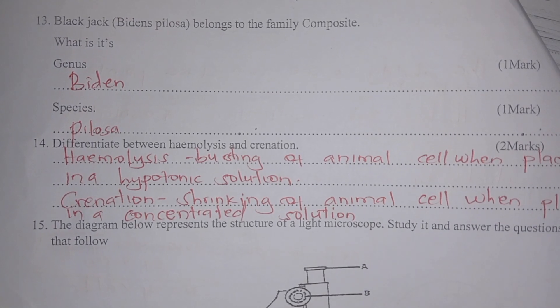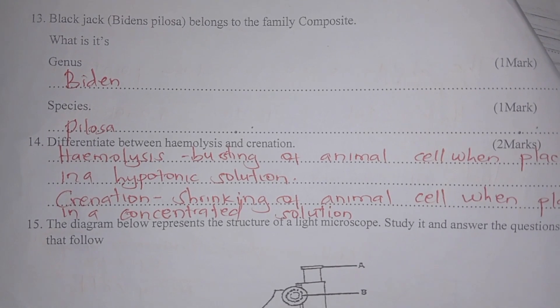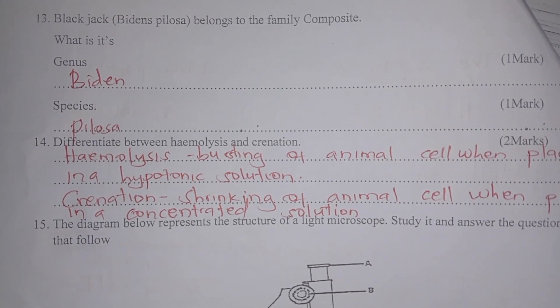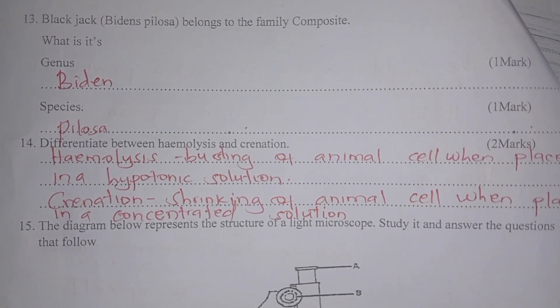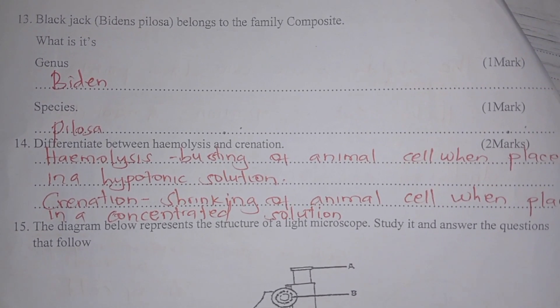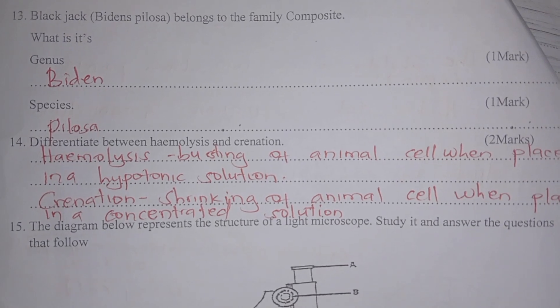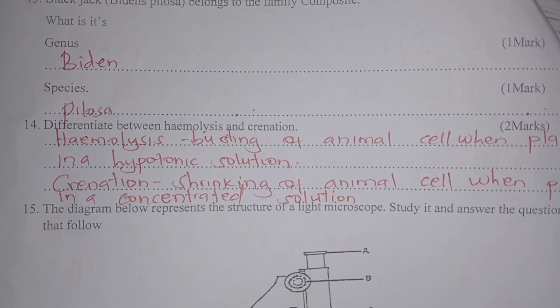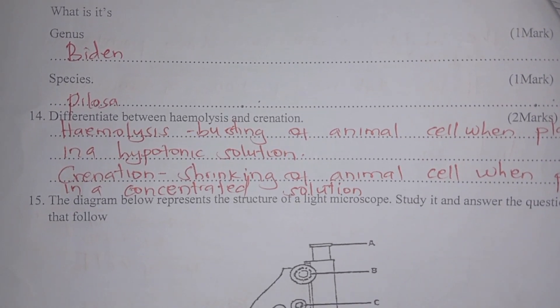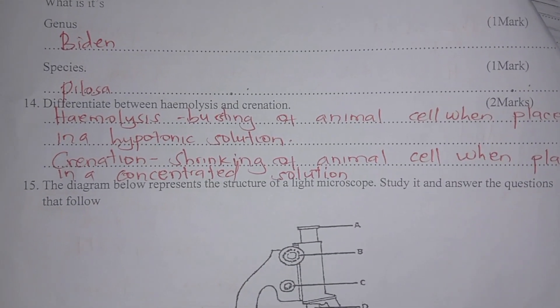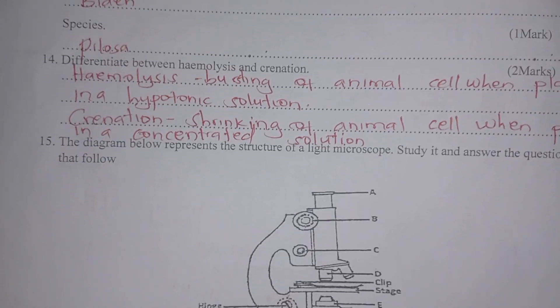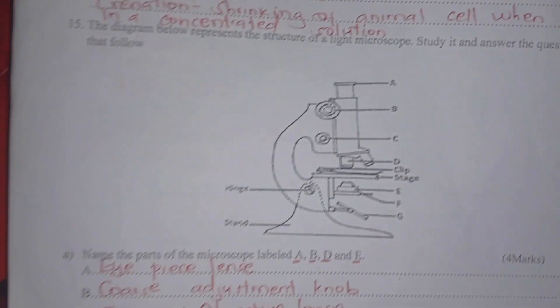Differentiate between haemolysis and crenation. Haemolysis is the bursting of an animal cell when placed in a hypotonic solution. Crenation is the shrinking of an animal cell when placed in a concentrated solution.